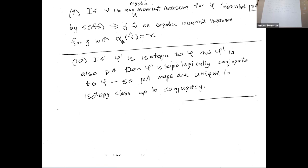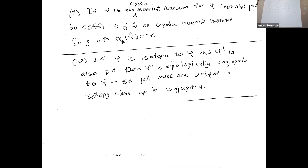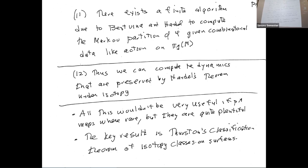Regarding measures: because we have this semi-conjugacy, ergodic measures lift up. So we not only get topological dynamics but also some ergodic theory dynamics. There's a uniqueness statement: if you're isotopic to a pseudo-Anosov, then you're conjugate to it on some invariant set. The strategy is to understand the model dynamics — Anosov or pseudo-Anosov — understand the Markov partition, and say the dynamics are preserved. To find the Markov partition, there's an algorithm due to Bestvina and Handel that can be implemented on a computer.